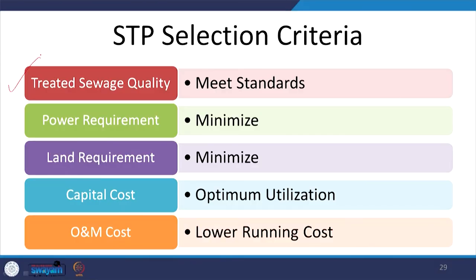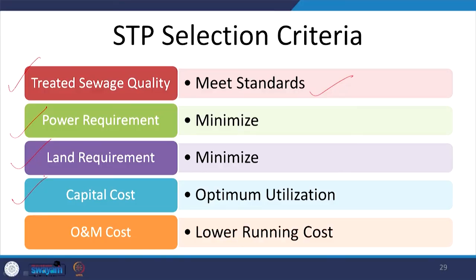When selecting an STP for any given project we have to consider several parameters: the quality of treated water coming out must meet CPCB standards; we must minimize power requirements; we must minimize land requirement if not enough land is available — though if land is abundant, stabilization ponds and root zone treatment can also be used. We have to optimize capital cost, avoid over-treatment beyond what is required, and reduce operations and maintenance cost. Based on these parameters we select the right type of STP and design it appropriately.